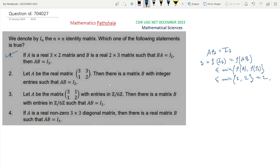Now look at option 2. A is the matrix [3, 3; 1, 2]. Then there is a matrix B with integer entries such that AB equals I2. If possible, suppose such B exists, so B equals [A, B; C, D] where A, B, C, D are integers. Then calculating AB equals I2, we find four relations from this.